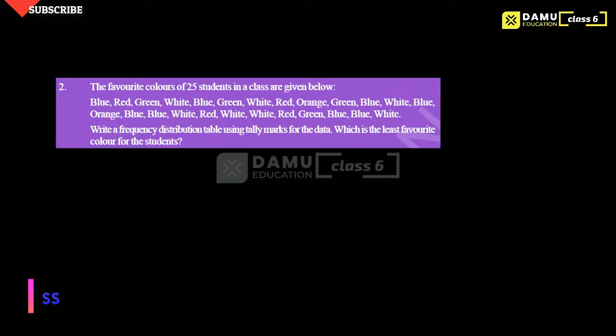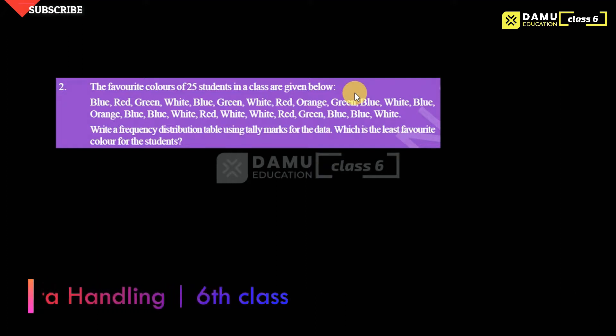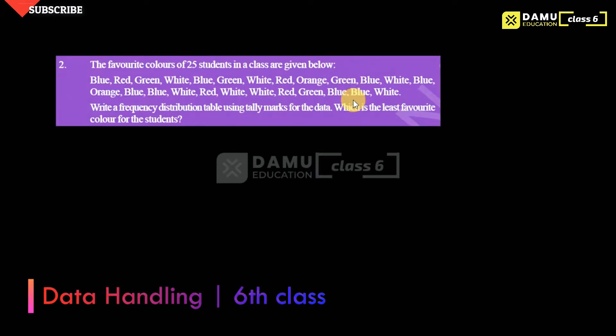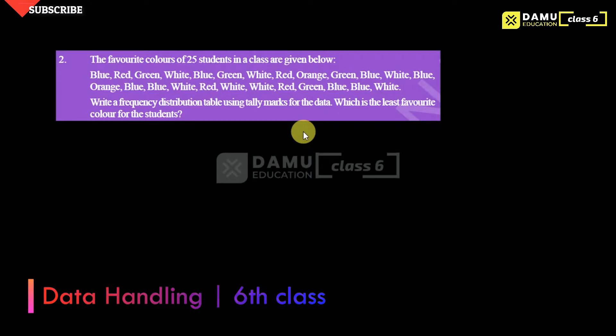Hello viewers. In this module, we are going to discuss the solution for the second question. The second question: the favorite color of 25 students in a class are given below. Then we need to write a frequency distribution table using tally marks for the data. Which is the least favorite color for the students?